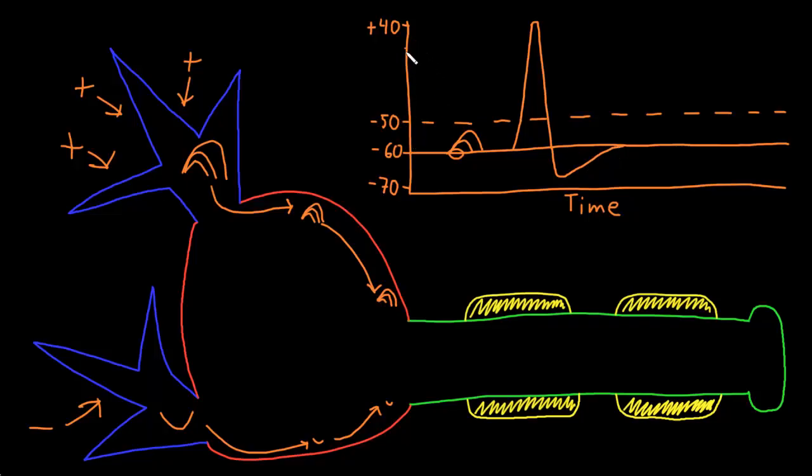So the exact values may vary between neurons, but common numbers are that it might go from around negative 50, if that's the threshold potential for that neuron, all the way up to somewhere around positive 40 or so. Then it may come all the way down to around negative 70 or so before it more slowly settles back into a typical resting potential of around negative 60 or so.